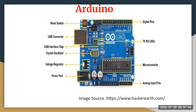Arduino is an open-source prototyping hardware platform that helps you build embedded and electronic projects. It consists of two things: a physical programmable circuit board and a software IDE. The IDE is compatible with Windows, Mac, and Linux platforms. Arduino consists of digital pins, analog pins, LEDs, a microcontroller, reset button, USB connector, USB interface chip, crystal oscillators, voltage regulator, and power port.